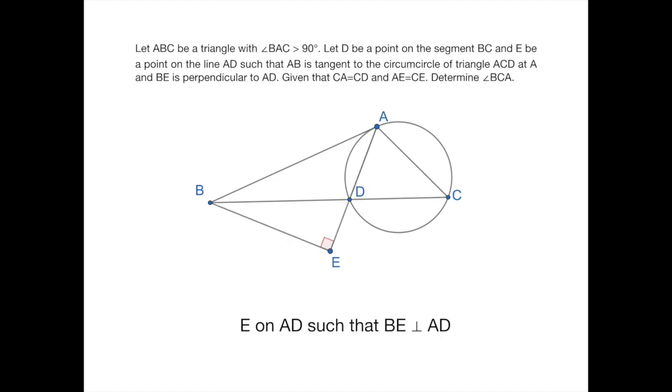Then we define a point E on the line AD such that BE is perpendicular to AD. And now given that segment CA equals CD and also AE equals CE, we want to determine angle BCA.